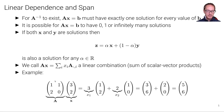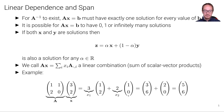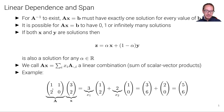Let's look at an example. We have matrix A with values 1, 1 and 2, 0, and vector x with values 3, 2. We can rewrite this by multiplying the first element of x with the first column of A — so 3 times (1, 2) — and adding the second element times the second column of A. This gives the resulting vector 5, 6. The matrix-vector product effectively represents a linear combination of the elements of x as weights with the columns of A.